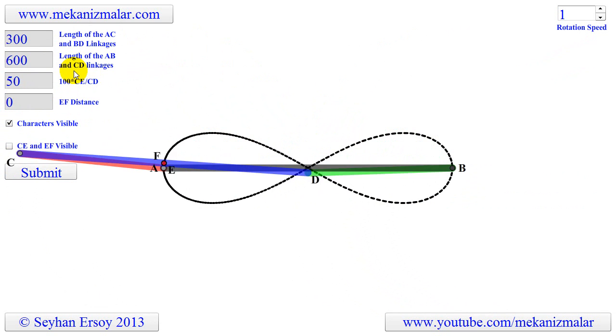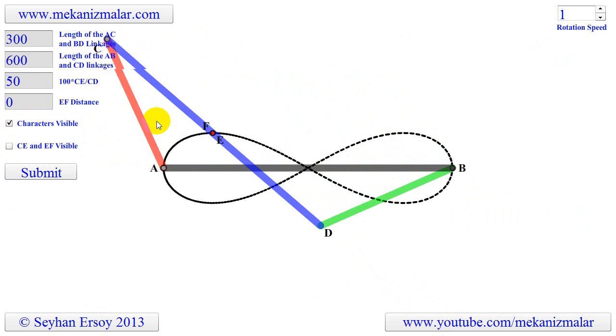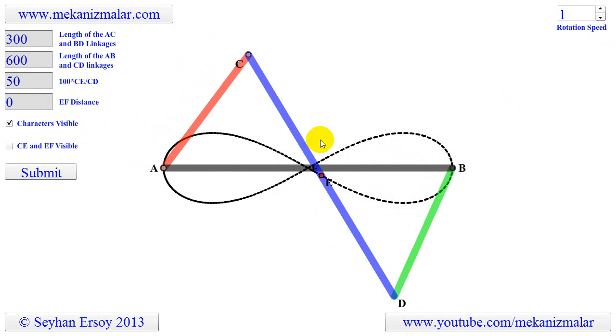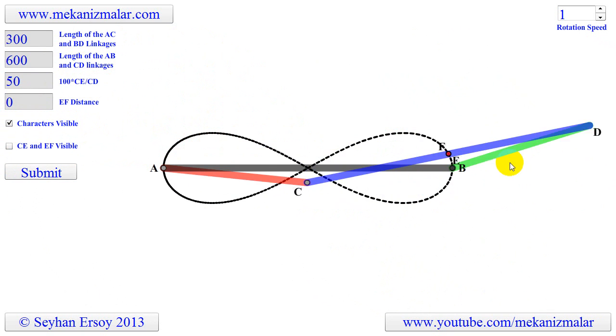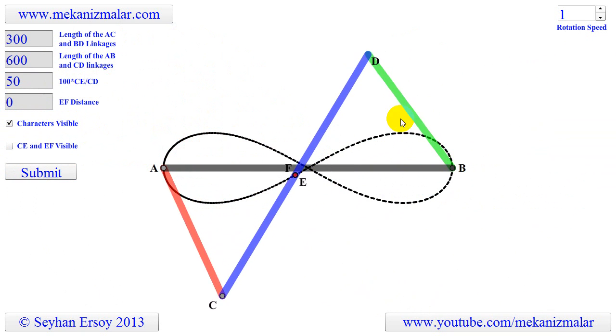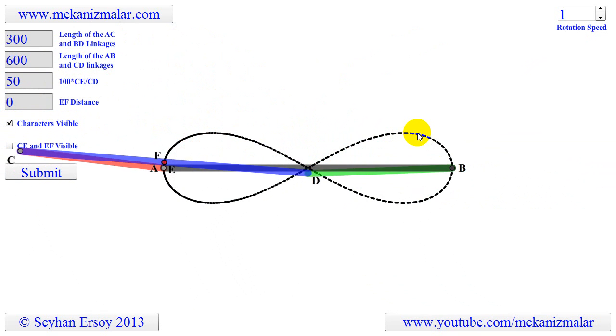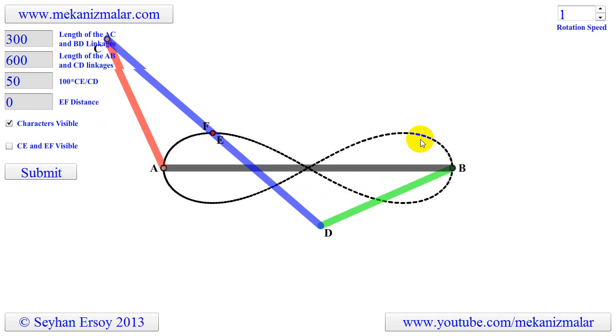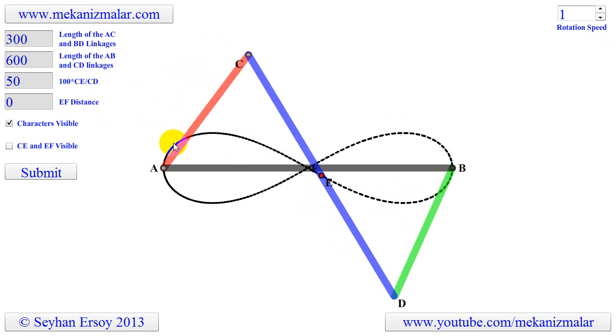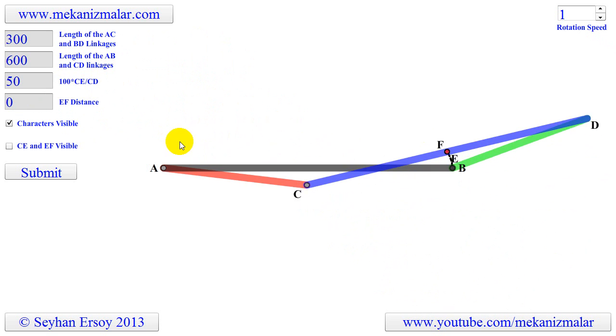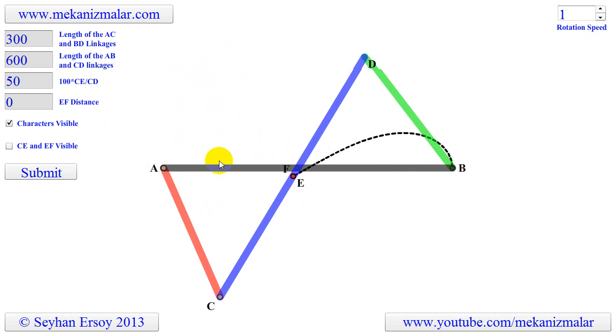Notice that the crank, the red linkage, rotates uniformly, while the follower, the green linkage, rotation is not uniform. If dashed plotting lines are spaced and longer, then the follower rotates faster than the crank. On the other hand, if the lines are closer, then the follower is rotating slower than the crank.